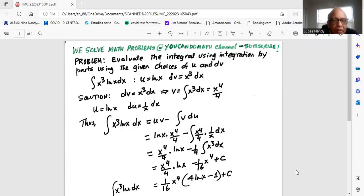They have given u is equal to ln x and dv is equal to x cubed dx. So, solution: since dv is equal to x cubed dx, then v is equal to integration of x cubed dx, which is equal to x to the 4 divided by 4.